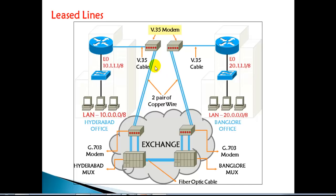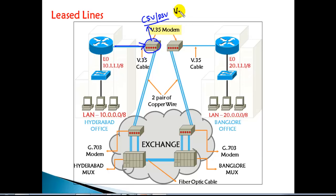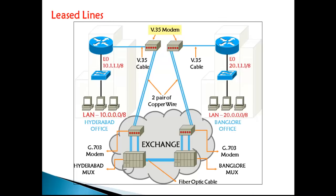When you take a leased line connection, the router connects to a leased line modem — generally called a CSU/DSU modem, which stands for Channel Service Unit / Data Service Unit. We can also call them V.35 modems. These are your typical leased line modems, which are provided by the service provider and placed at your location.